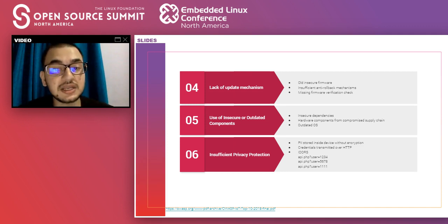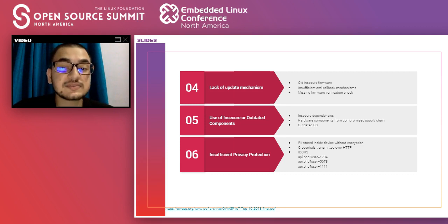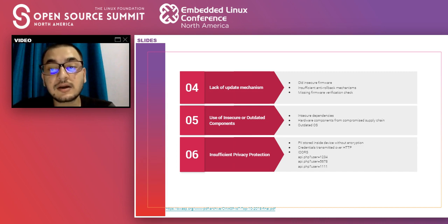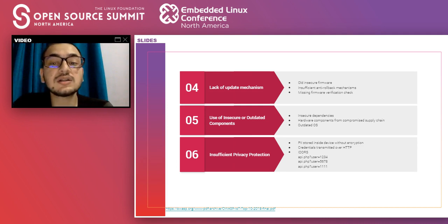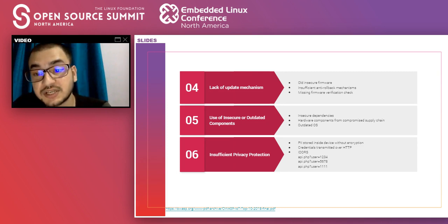The fifth on the list is the use of insecure or outdated components. This is especially true for industrial IoT, where large numbers of legacy systems are still being used — they are often expensive and technically difficult to upgrade. One vulnerable component can negate all the security mechanisms you have implemented. It is very important to track vulnerabilities in the components and libraries being used.